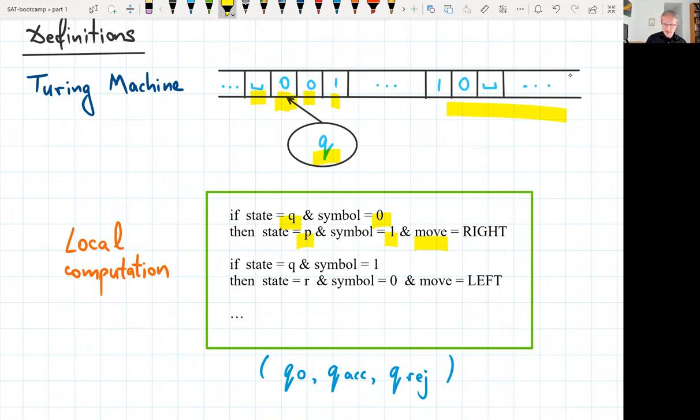It says that if your current state is something and you see a particular symbol, then update your state to maybe something new, update the symbol that you're looking at to something new or keep it the same, and then move on the tape position to the right or position to the left. So in this case, for example, after looking at the symbol 0, we can maybe replace it with a 1 and start looking at the next symbol on the right-hand side. I won't be using this that much, but you have a special initial state Q0, and you have special halting state Qaccept, which signals that you accepted a given input, or Qreject, which means that you rejected the input.